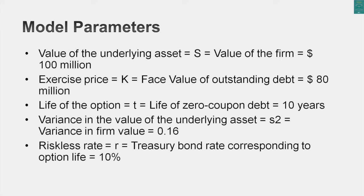With that information and an option pricing view of the world, I can tell you how much the equity in this business is worth and what interest rate to charge on the debt. Setting up the option pricing model: the value of the underlying asset, $100 million, becomes S. The face value of the debt, $80 million, becomes the strike price K. The time to expiration is 10 years — because at the end of year 10, the bondholder gets the power to liquidate. That's why I used a zero-coupon bond: with regular bonds, interest payments shift power at each payment date, giving you a series of short-term options rather than one 10-year option.